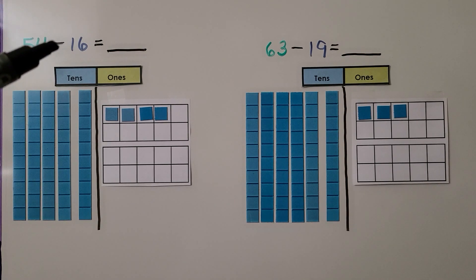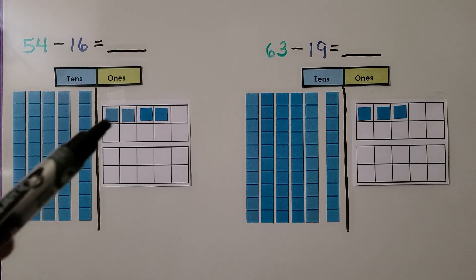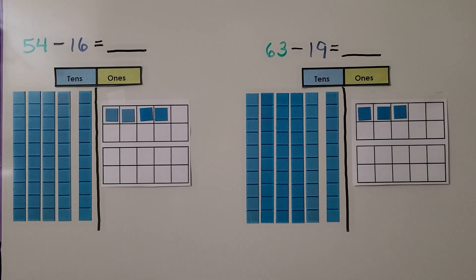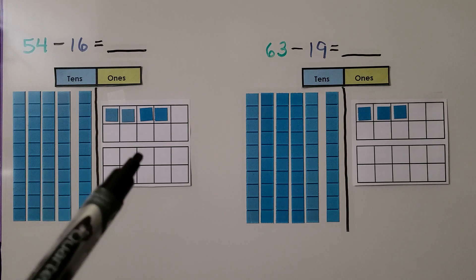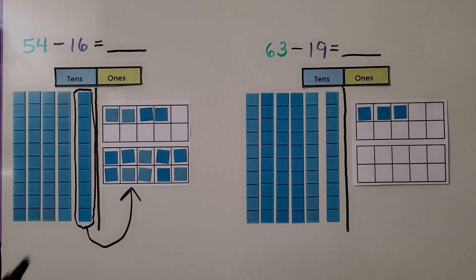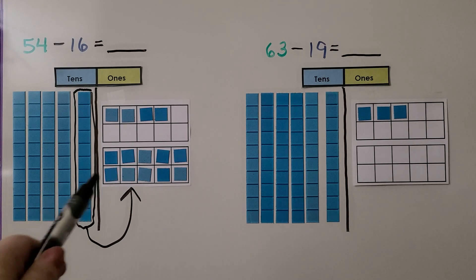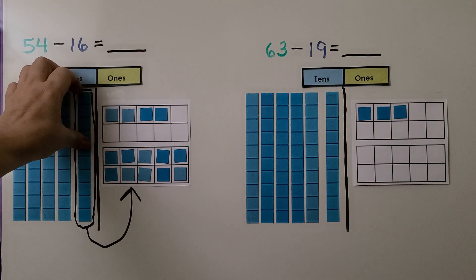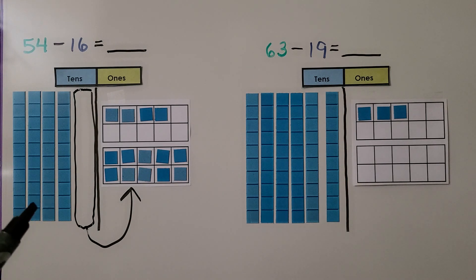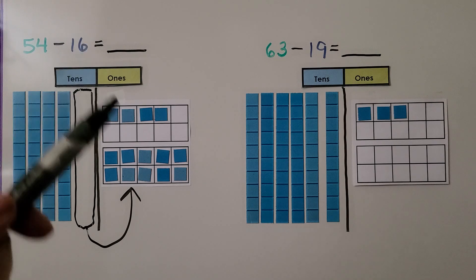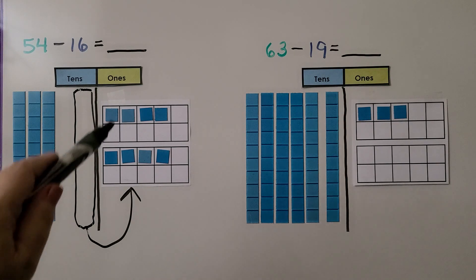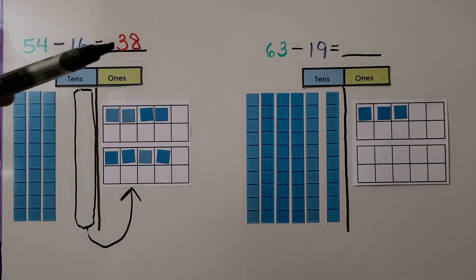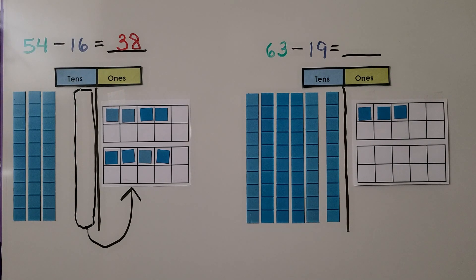Here we have 54 minus 16. That's 5 10s, 4 1s. We need to take away 16. I only see 4 1s here, but we need to take away 6 1s, so we're going to turn this 10 into 10 1s. We take this 10 and turn it into 10 1s — now it's not there anymore. Now we can take away 6 1s. We're left with 3 10s, 8 1s. 3 10s and 8 1s is 38. So 54 minus 16 is equal to 38.